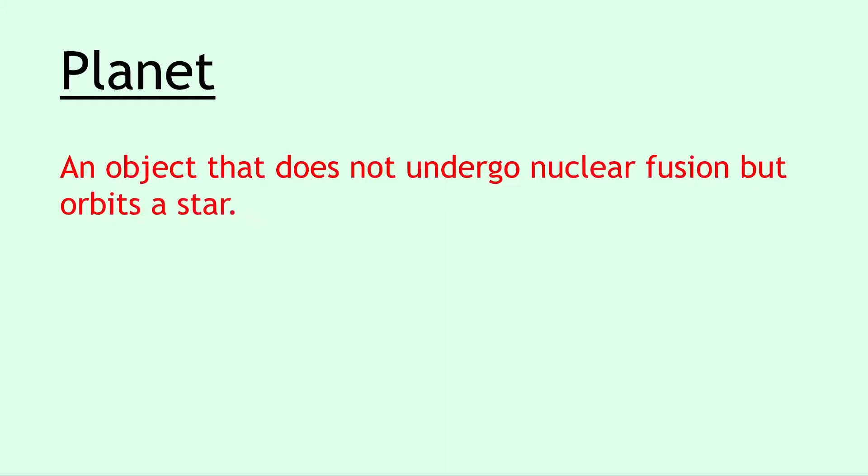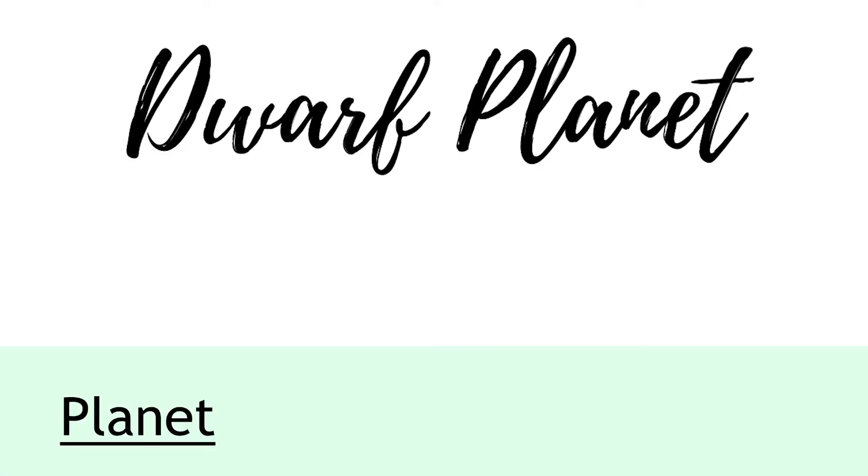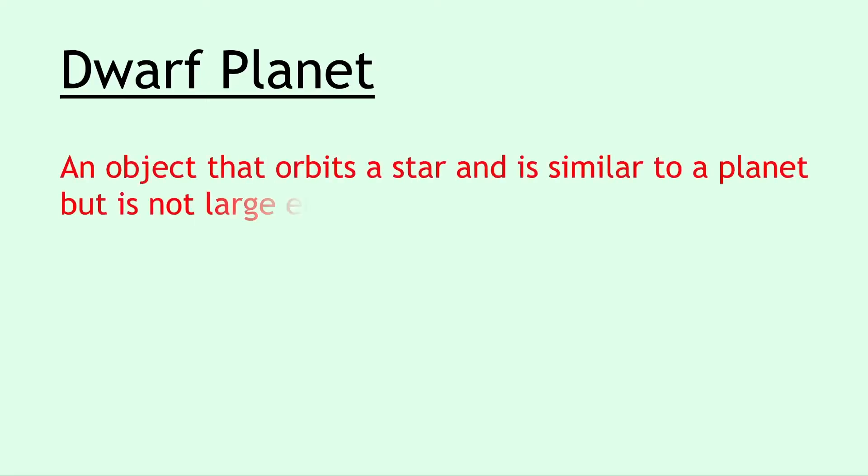To kick off the space definitions, we have planet, and a planet is defined as an object that does not undergo nuclear fusion but orbits a star. Next, we have dwarf planet, and a dwarf planet is an object that orbits a star and is similar to a planet but is not large enough to clear its orbital path of debris.